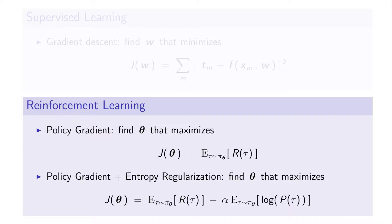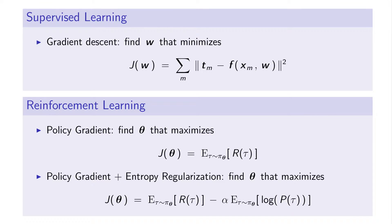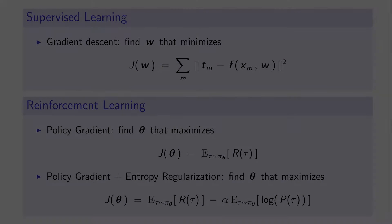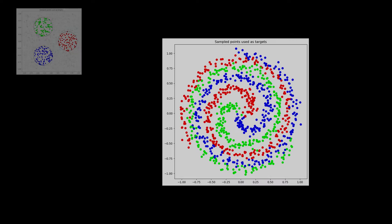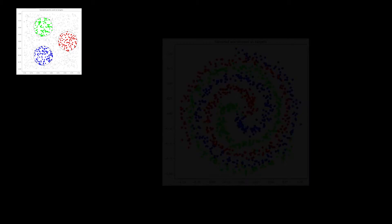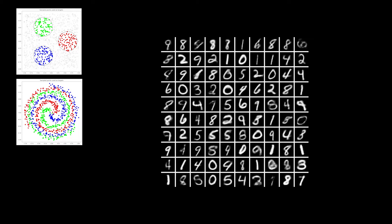You will see it soon. In this video, I will show you the result of applying the three approaches mentioned before to three different classification problems: the labeling of three circles, the labeling of three spirals, and the classification of digits using the MNIST database. Now I'm going to stop talking so you can enjoy the training process.